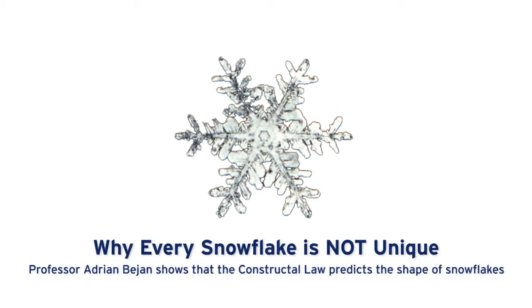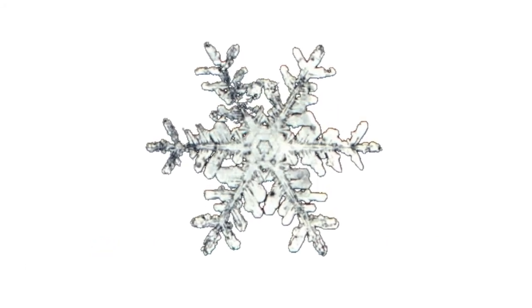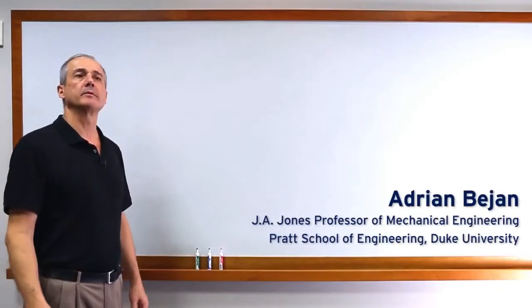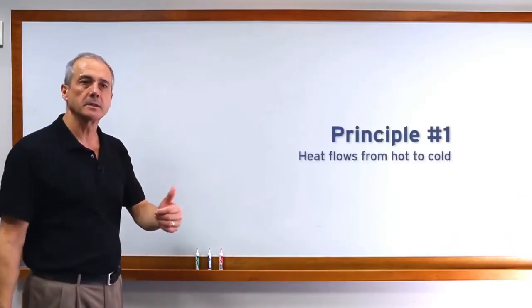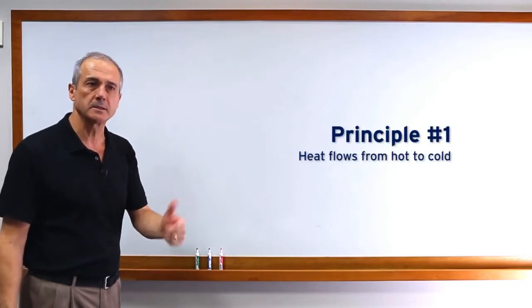The snowflake has one kind of architecture that is predictable, provided that you recognize the principle. First, what flows through the snowflake? Heat flows.